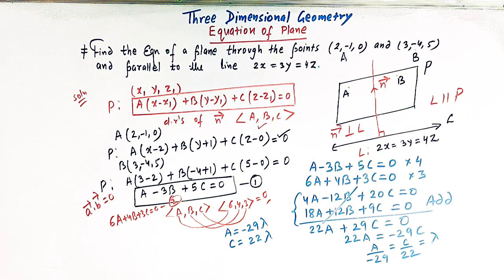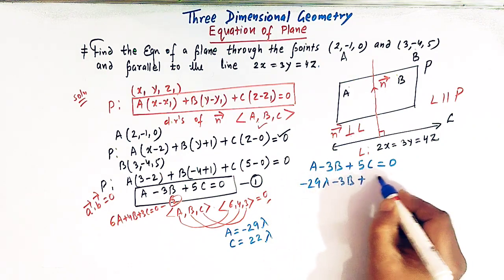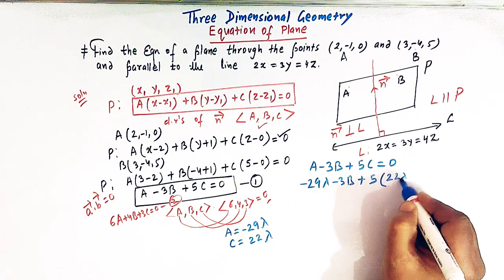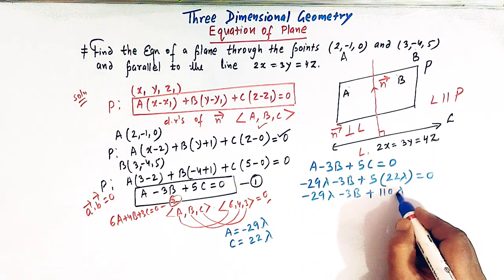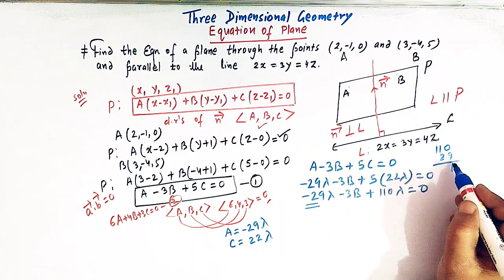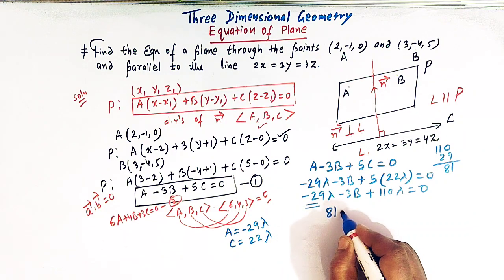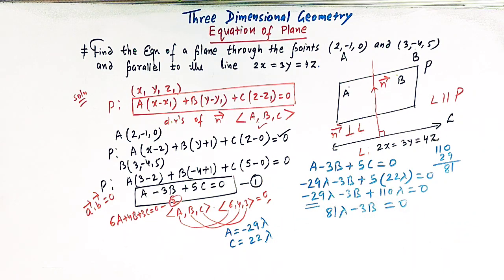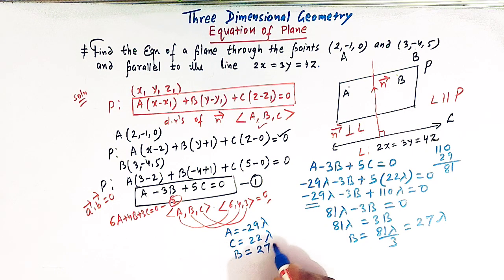Substituting A = -29λ and C = 22λ into the first equation: -29λ - 3B + 5(22λ) = 0, so -29λ + 110λ - 3B = 0, giving 81λ = 3B, therefore B = 27λ.